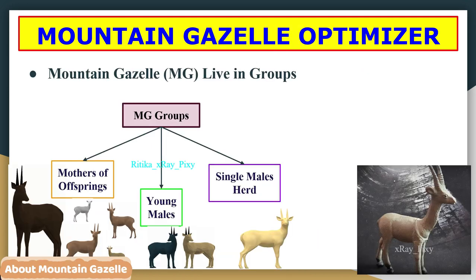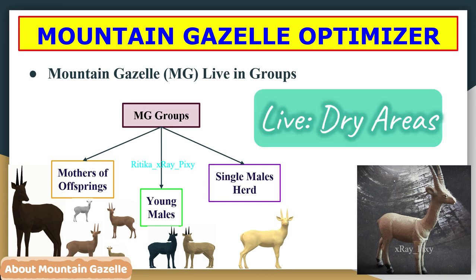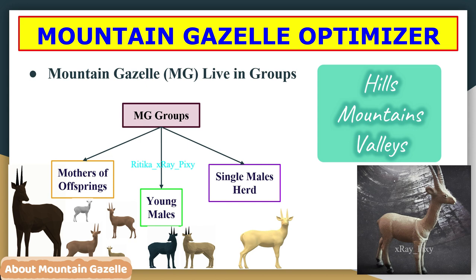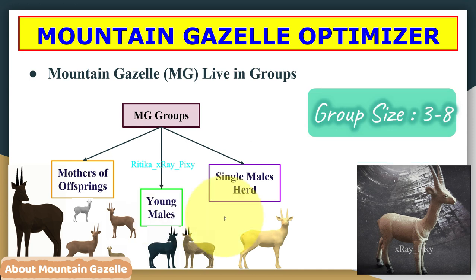Mountain gazelles live in groups and are adapted to live in dry and arid conditions. They are active during daytime and rest at night, spending most of their time in hills, mountains, and valleys. They form territories and stay in groups of 3 to 8 individuals.